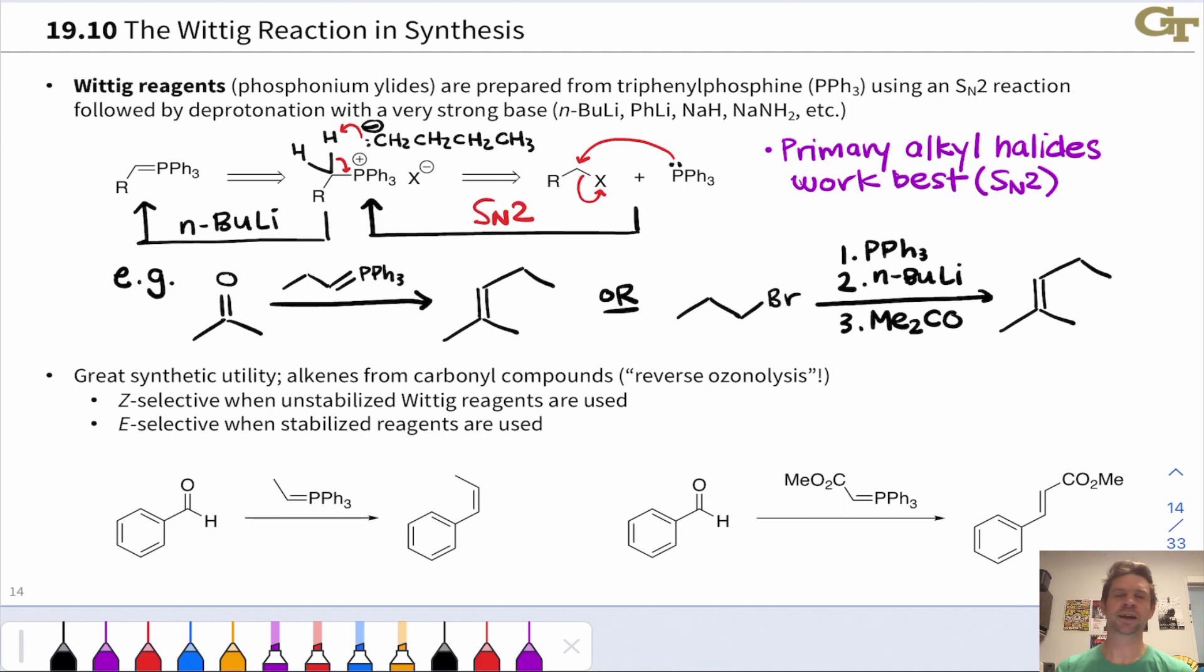Typically, and this is a general guideline for Wittig reactions, the reaction is Z-selective or selective for the cis isomer when unstabilized Wittig reagents are used.